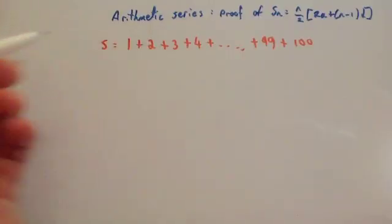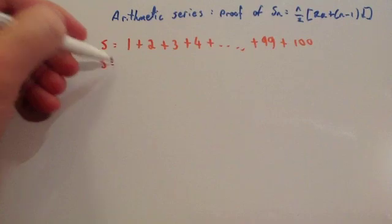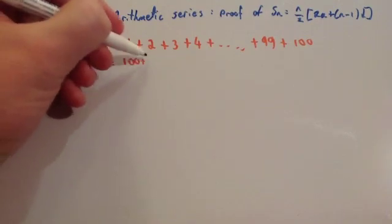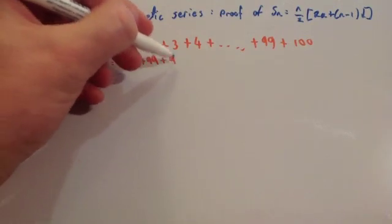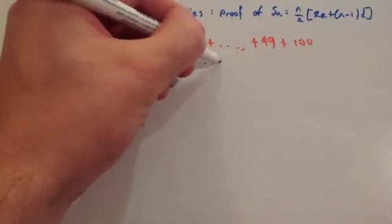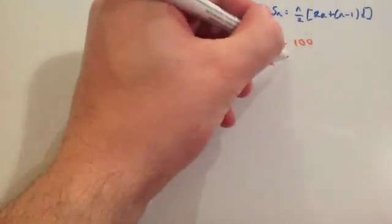Let s be the sum of that. Now if you write that backwards, you would get 100 plus 99 plus 98 plus 2 plus 1.